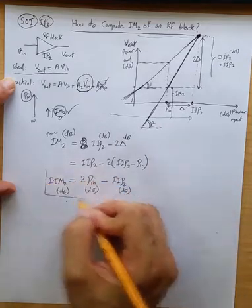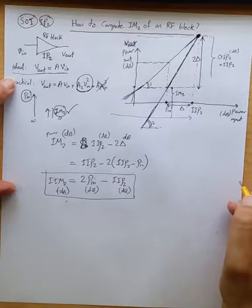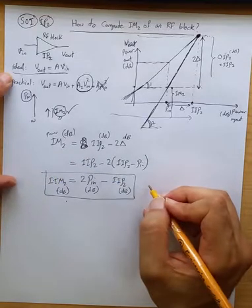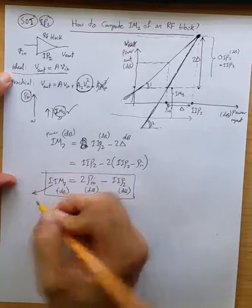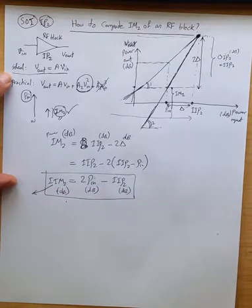You can write the same relationship output referred. It doesn't matter. So that's how we get an approximation of the second order intermodulation product for a nonlinear RF block.